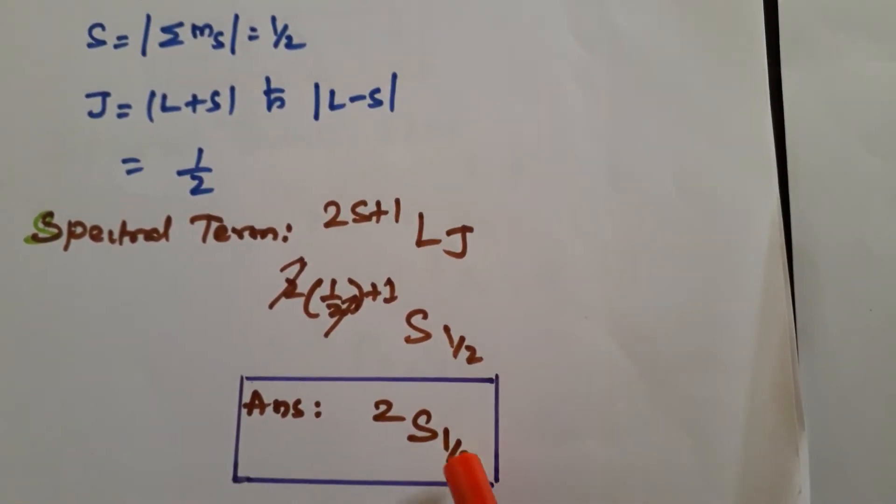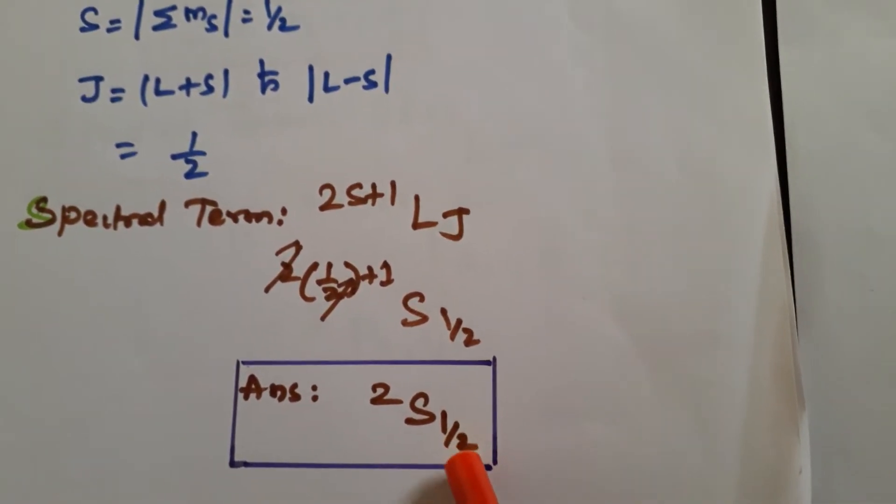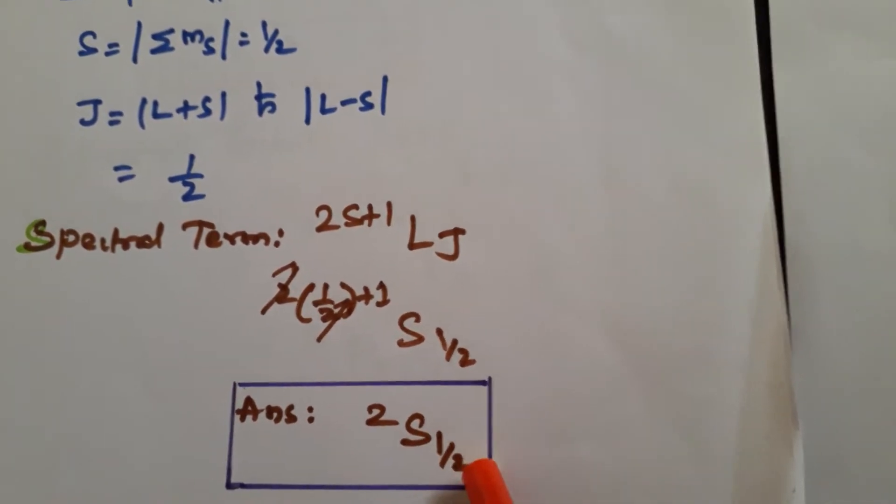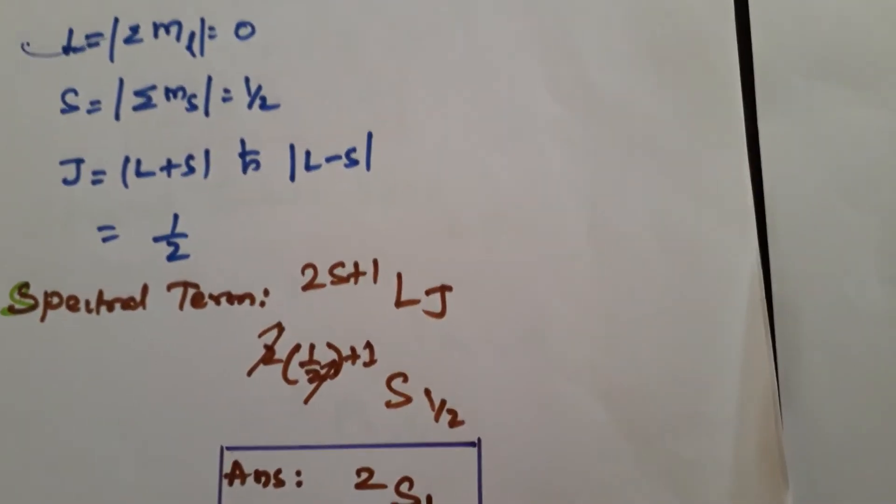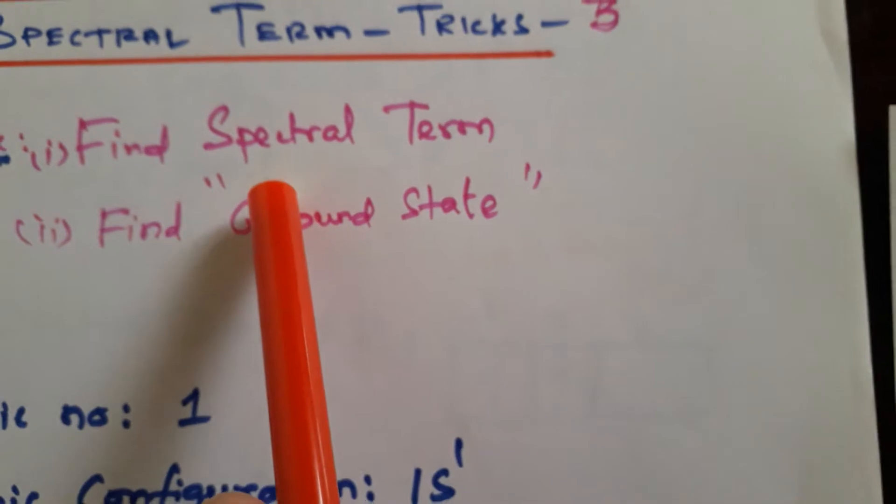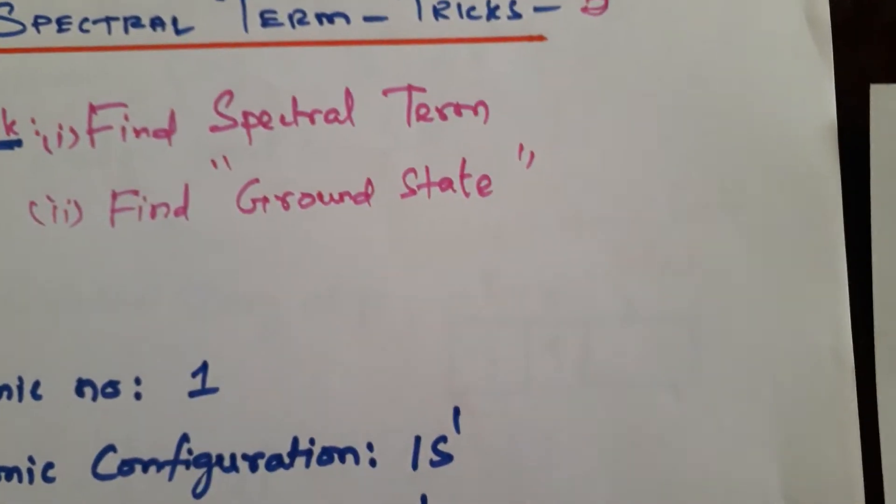Since here there is only one term here, J value is only one J. So this is the ground state. We need not to bother about this. So from this we found spectral term and ground state.